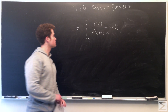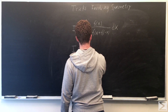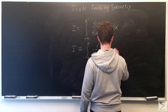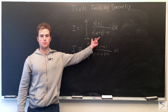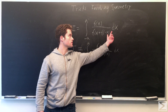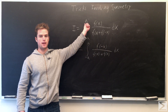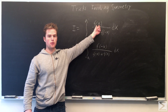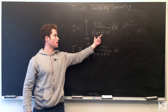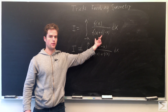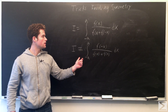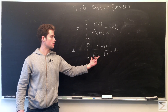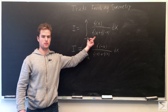One thing we can know about this: if we plug in minus x, then dx becomes negative dx, and the limits go from a to minus a, which with the sign flip becomes minus a to a again. The top part becomes f of minus x, and the bottom becomes f of minus x plus f of x, which is the same as f of x plus f of minus x. So we get an integral of f of minus x over the same denominator, which gives us the same value as we originally had.